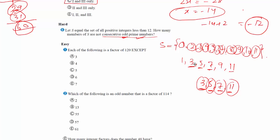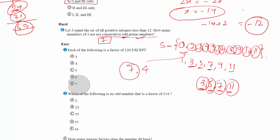Out of 11 members in S, 4 are consecutive odd prime numbers. So the number that are NOT consecutive odd prime numbers is 11 minus 4, which equals 7. The answer is 7. The key strategy here is to break the compound condition into parts: first find odd numbers, then prime numbers, then consecutive primes.